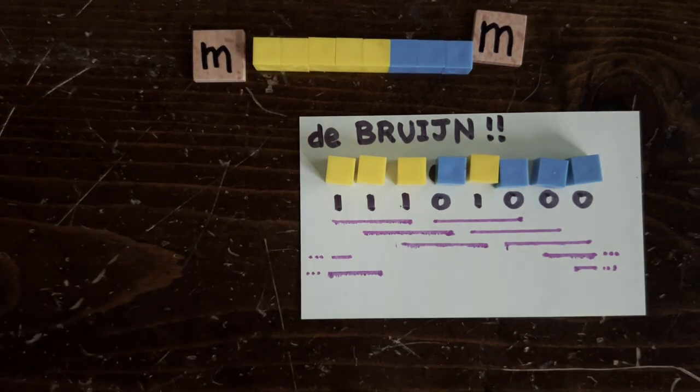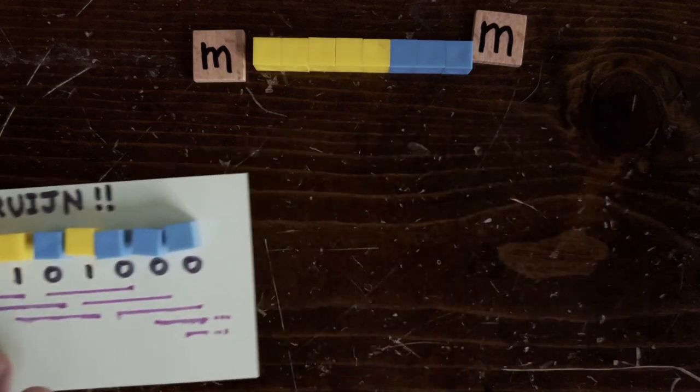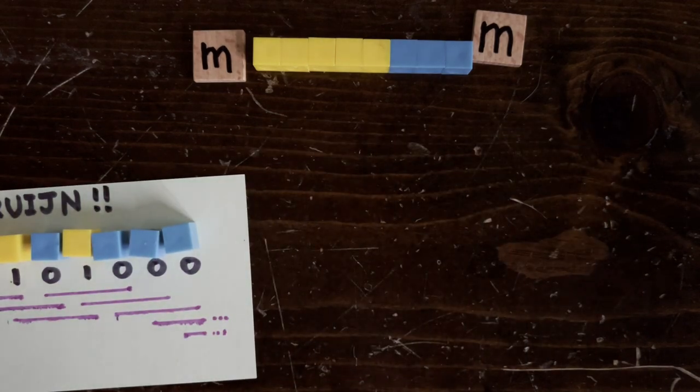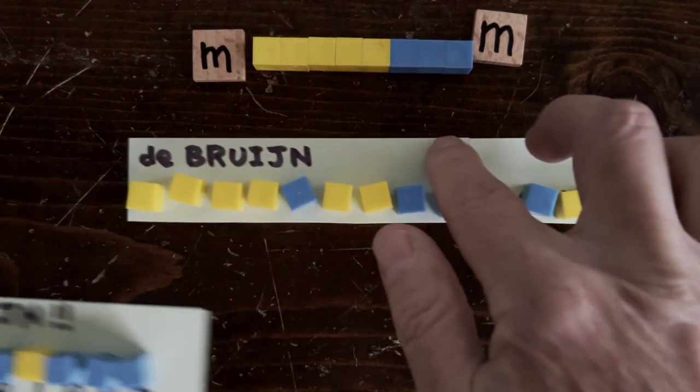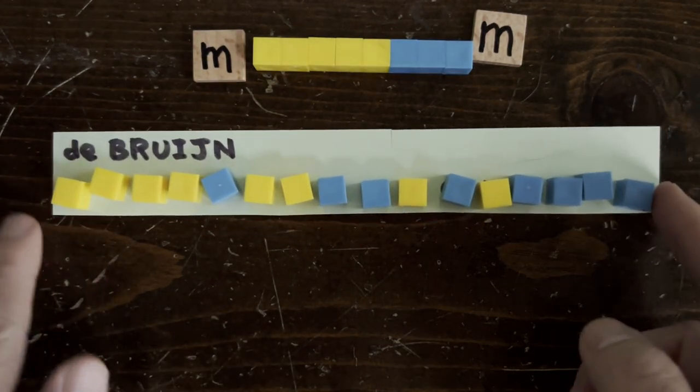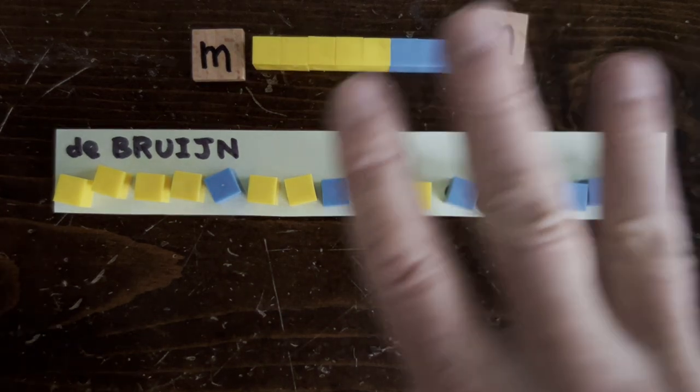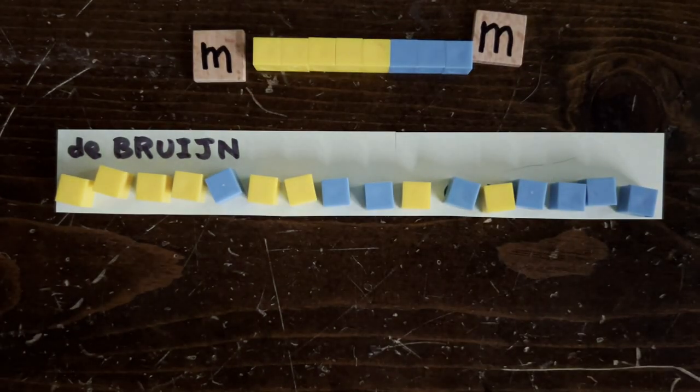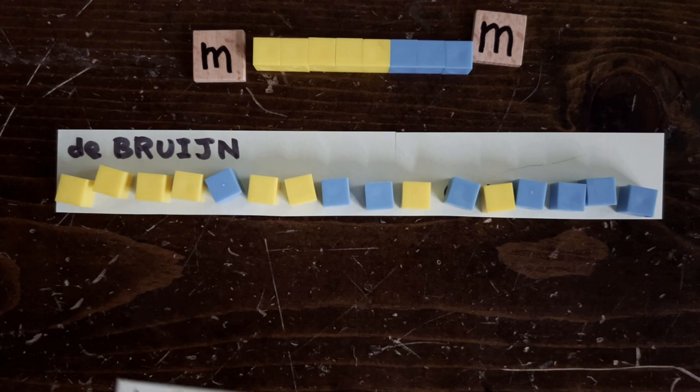And here's a de Bruijn sequence of length 16. And here every subsequence of length 4 is represented, including 1-1-1-1 and 0-0-0-0 and all the rest of them. None of them repeat. So only sequences of length 3 repeat, such as 1-1-1, which appears here and here. You get the idea.